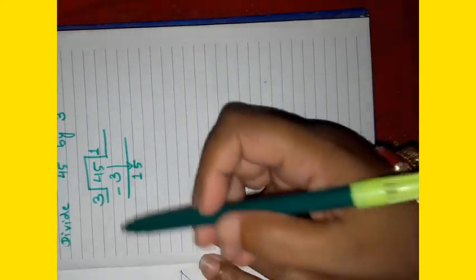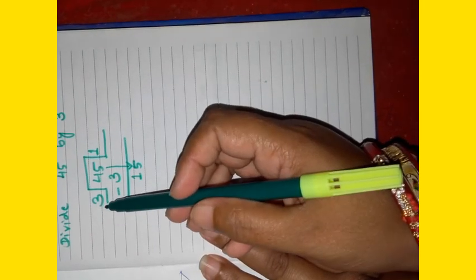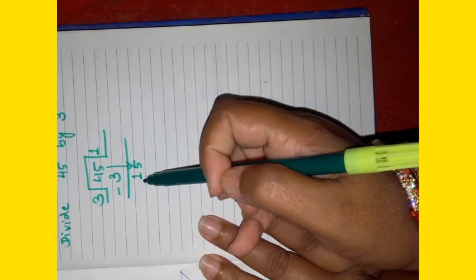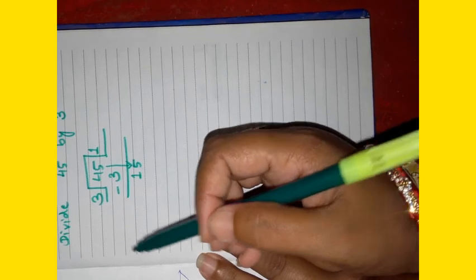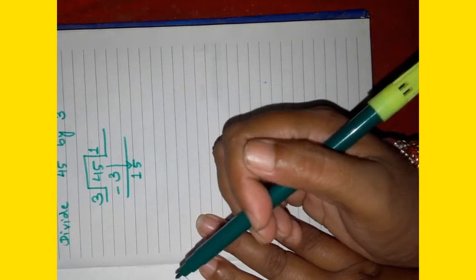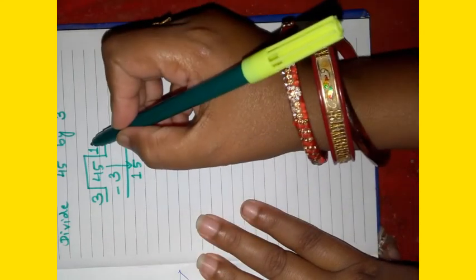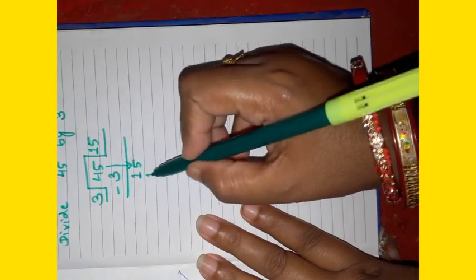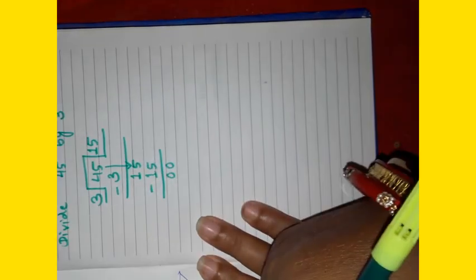Now see how many times 3 goes into 15. Recite the table of 3 up to we reach 15: 3 ones are 3, 3 twos are 6, 3 threes are 9, 3 fours are 12, 3 fives are 15. So write down 5 in the quotient. Then 3 fives are 15. Then subtract. It is 0.